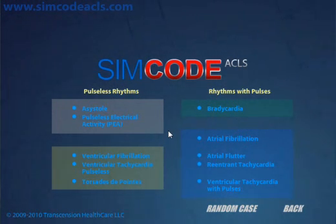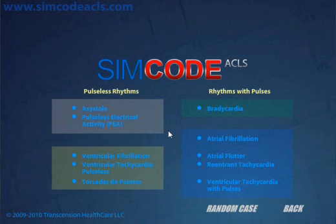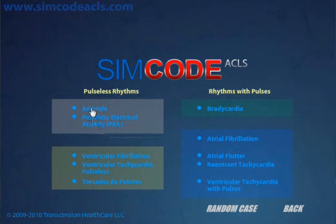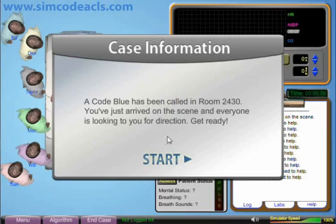Remember that asystole means that there is a lack of electrical activity in the heart, and because of that, the patient will not have a pulse. Here you can see asystole listed in the pulseless rhythm column. We will go ahead and click on it to generate a case. Remember that in SimCodeACLS, each case is unique and unscripted, therefore we will have to approach it as such.